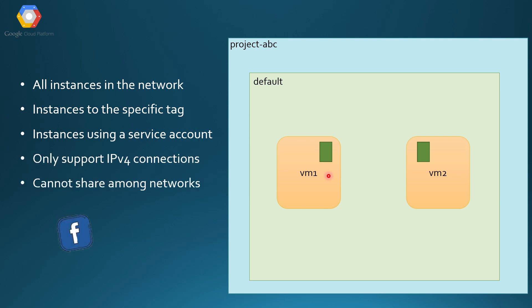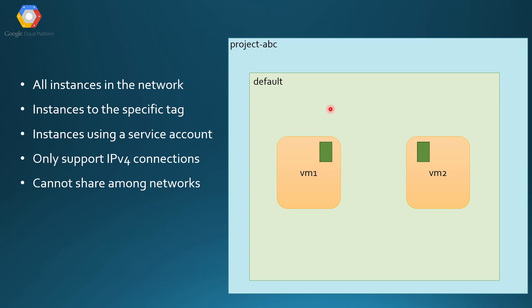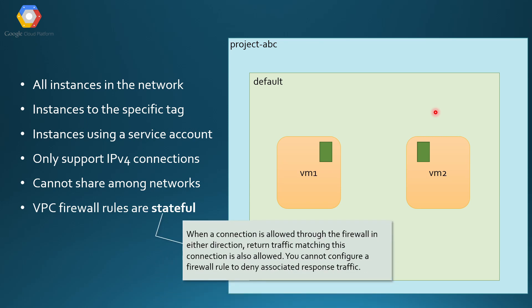You cannot share firewall rules among different networks, even if you peer the networks. When you create rules, they are always for that specific VPC. If you peer the default VPC with some other VPC, your firewall rules are not shared with the other VPC. Firewall rules are stateful — this is very important to remember for your Associate exam or in general.